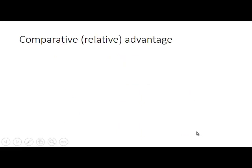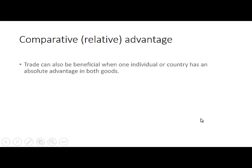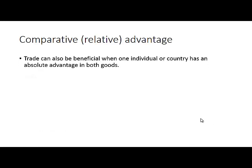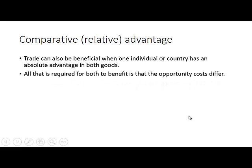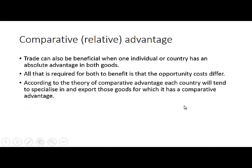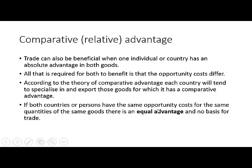Now let's look at comparative or relative advantage. Trade can also be beneficial when one country or individual has absolute advantage in both goods. All that is required for both to benefit is that opportunity cost should differ. According to the theory of comparative advantage, each country will tend to specialize in and export those goods for which it has a comparative advantage. If both countries have the same opportunity cost for the same quantities of the same goods, there is equal advantage and no basis for trade.